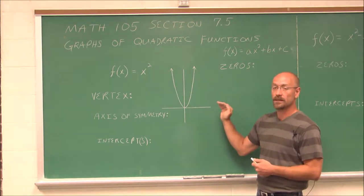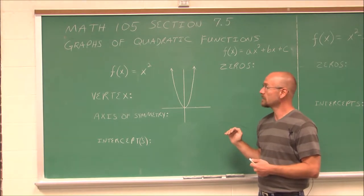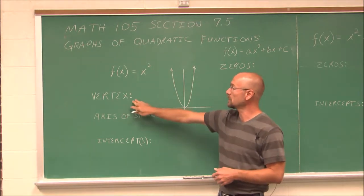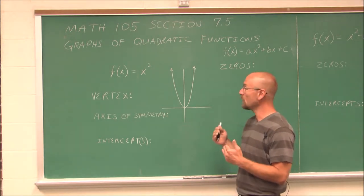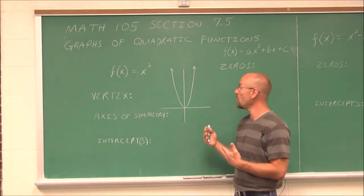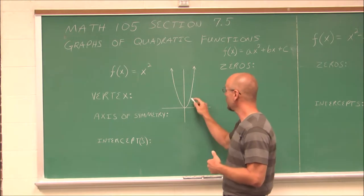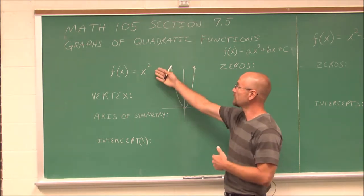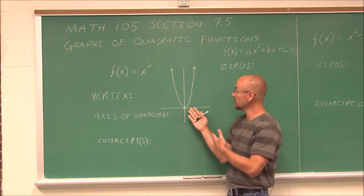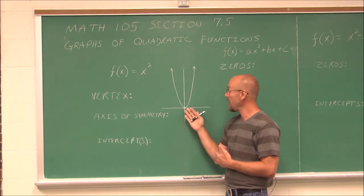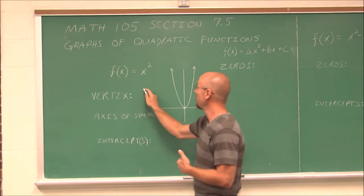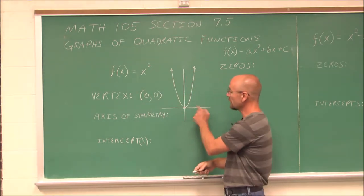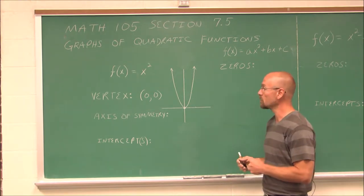One of the defining things of every parabola is that we can define its vertex. Every parabola has a vertex, and the vertex is either the lowest point or the highest point on the graph. For f of x equals x squared, its vertex — in this case its lowest point — is at the origin, the point (0, 0). So the vertex is just the highest or lowest point of a parabola.